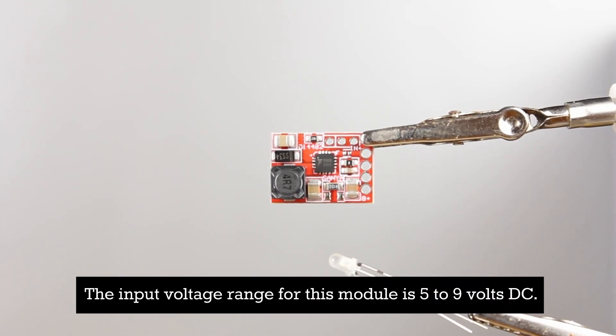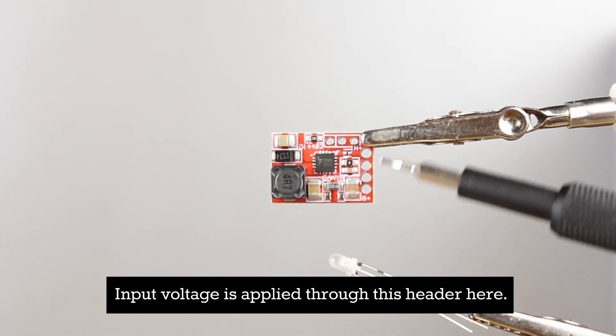The input voltage range for this module is 5 to 9 volts DC. Input voltage is applied through this header here.